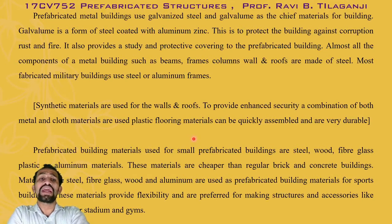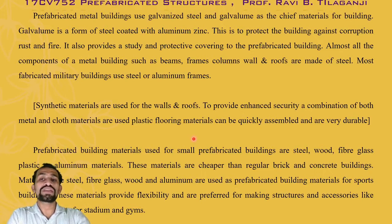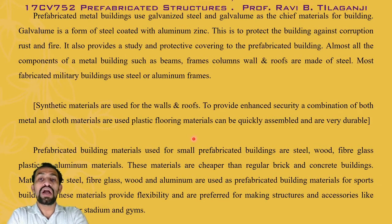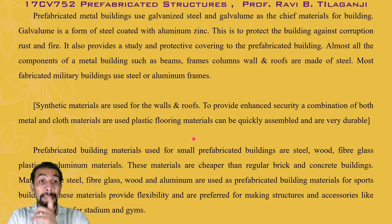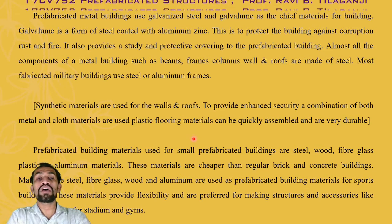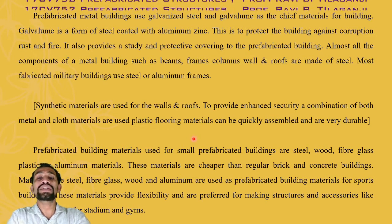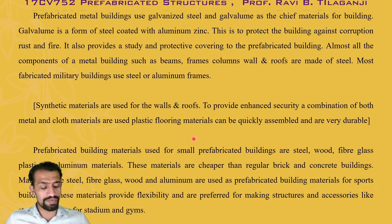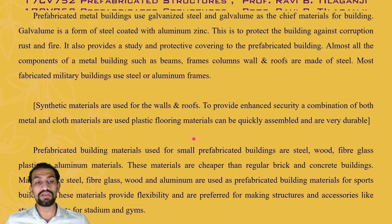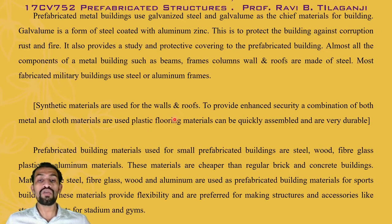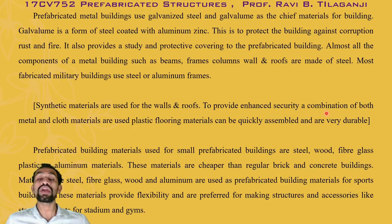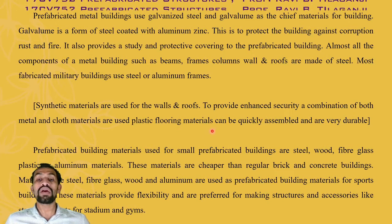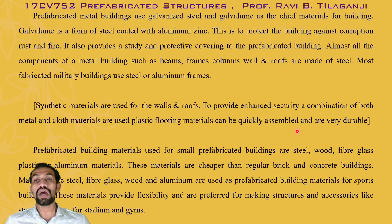Galvanized steel is a chief material for buildings. It is steel coated with aluminum-zinc and is used to protect the building against corrosion, rust, and fire. It also provides a protective covering to the prefabricated building. Almost all components of metal buildings — such as beams, frames, columns, walls, and roofs — are made of steel. Some synthetic materials are also used for walls and roofs to provide enhanced security, with a combination of both metal and cloth materials.